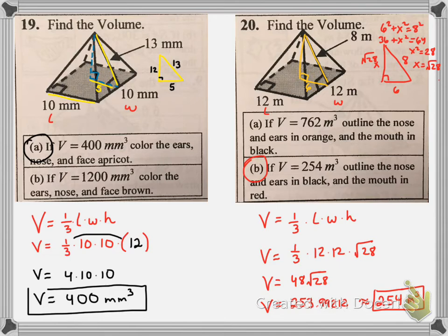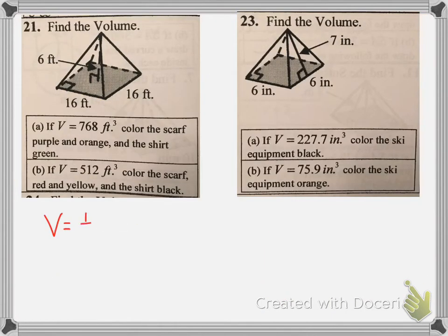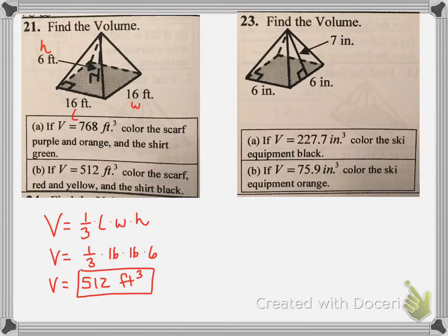So let me walk you through two more problems if you need some extra practice. So number 21. This is not one that people usually miss because this one is what you would expect. It gives you the length and the width. And then they're nice here. Unlike in 19 and 20 here, they give you the height. The height is just six. So you 16 times 16 times six. And then you can just multiply that out and you get 512 feet cubed. Notice the difference in the two problems here. They give you the height from the top to the center of your base.